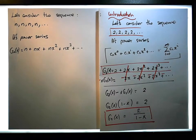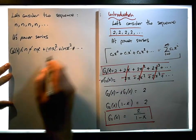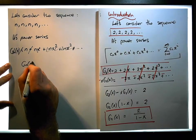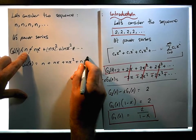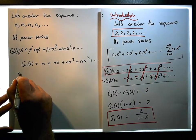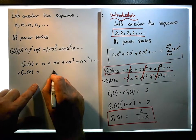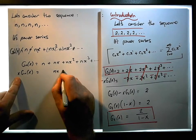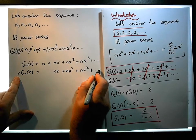So g_n(x) is simply equal to n plus nx, plus nx squared, plus nx cubed, all the way down. Now let's multiply this by x: x times g_n(x). x times n gives us nx, x times nx gives us nx squared, x times nx squared gives us nx cubed, and so on and so forth.